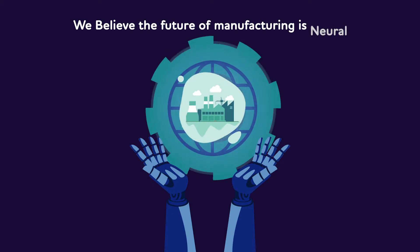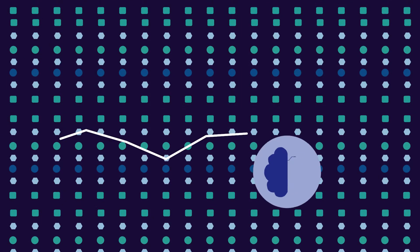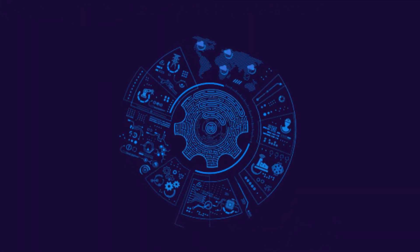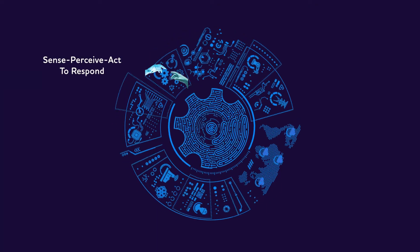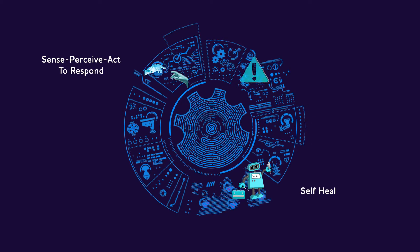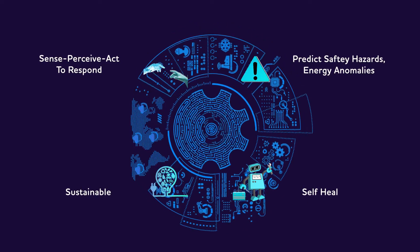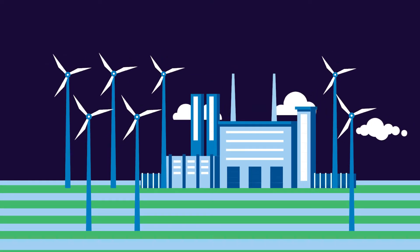We believe the future of manufacturing is neural. By taking inspiration from the biological neural system, can the manufacturing plant adapt these neural traits and evolve as a biological neural system that responds to external stimuli, heals itself, predicts danger, perceives anomalies, and acts in self-defense? Let's take a peek into the factory of the future, or what we call the factory that feels.